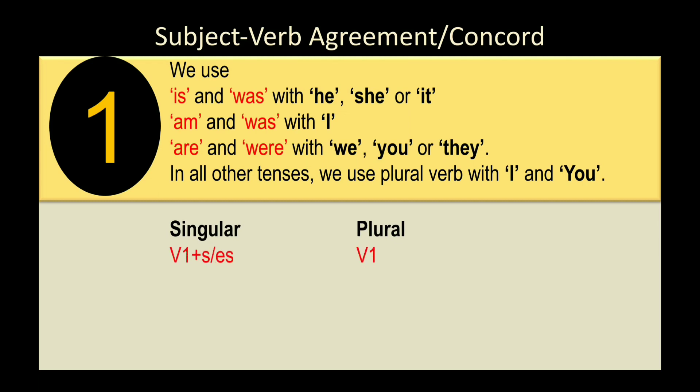To identify singular and plural verbs: a verb's first form with 's' or 'es' is singular; the first form alone is plural. 'Does' signals singular; 'do' signals plural. 'Is'/'am' denotes singular; 'are' denotes plural. 'Was' is singular; 'were' is plural. 'Has' is singular; 'have' is plural.